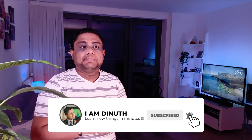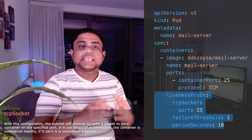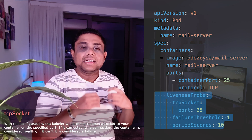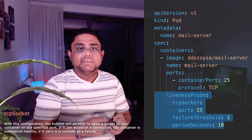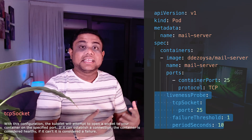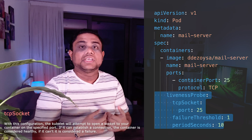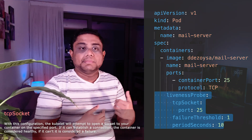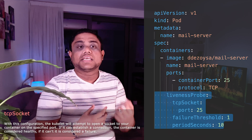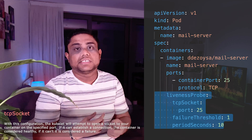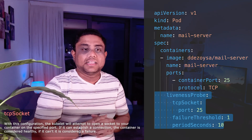The second check type is TCP. This is used for ports that expose non-HTTP services. For example, if you are deploying a pod which is running a mail server, in that case you cannot check the health using HTTP. Instead, you can use TCP socket to establish a successful TCP connection to check whether the application running inside the pod is healthy or not.